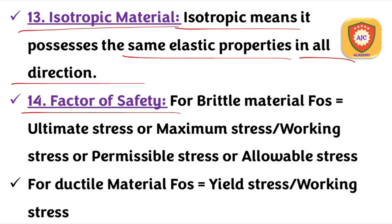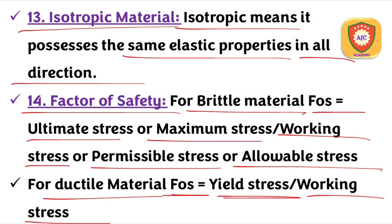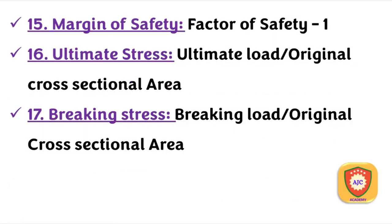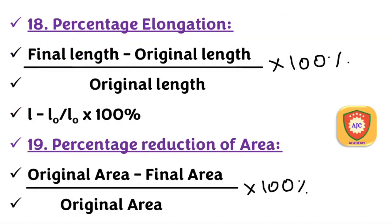Factor of safety for brittle material = Ultimate stress / Working stress (permissible or allowable stress). For ductile material: Factor of safety = Yield stress / Working stress. Margin of safety = Factor of safety − 1. Ultimate stress = Ultimate load / Original cross-sectional area. Breaking stress = Breaking load / Original cross-sectional area.